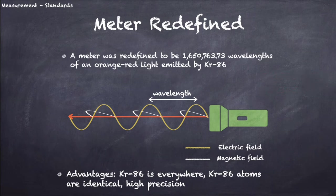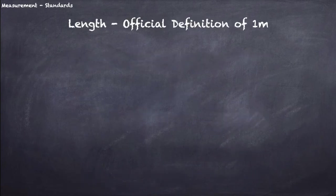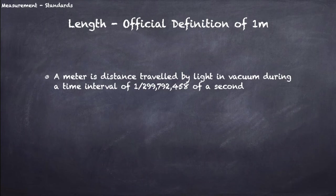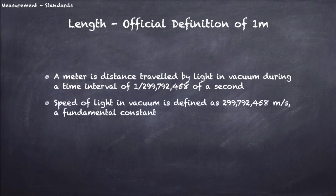But alas, eventually even the Krypton-86 standard is not good enough for bacon lovers. I mean physicists. So the meter was redefined again. Today, the meter is officially defined as the distance traveled by light in vacuum during 1 over 299,792,458 of a second. This new definition makes sure that light travels exactly at 299,792,458 meters per second in vacuum. This speed is a fundamental constant, meaning physicists have all agreed that this is the exact value of the speed of light in vacuum, not an approximation.